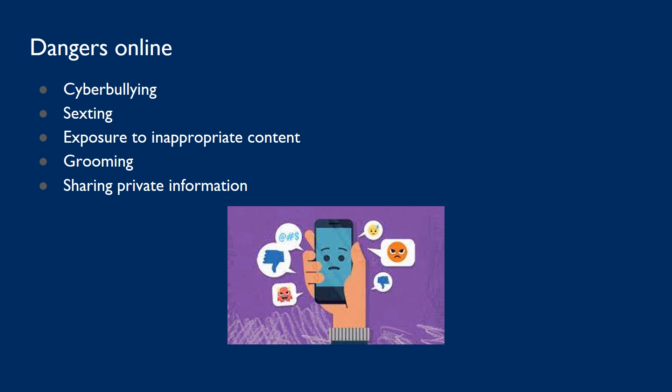Grooming — befriending a young person with a view to exploit or cause them harm. And sharing private information: this is information that identifies a person, such as their phone number, address or financial details. Sharing this information could make a person susceptible to identity theft, fraud or online hackers.